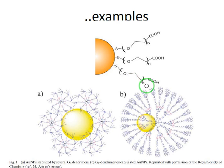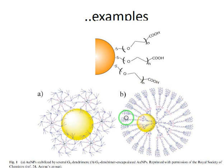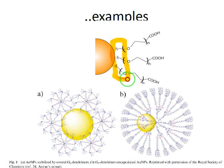As you can see here, the AU nanoparticles have been coated by dendrimers, or hyper-branched polymers, and this coating has taken place due to the presence of these thiol groups, as we mentioned.